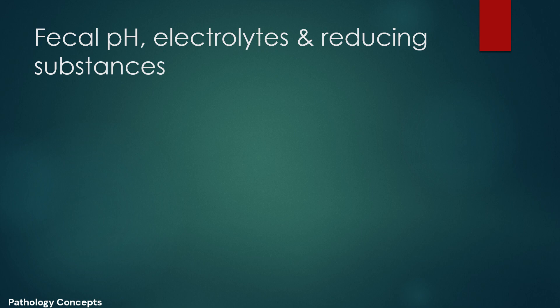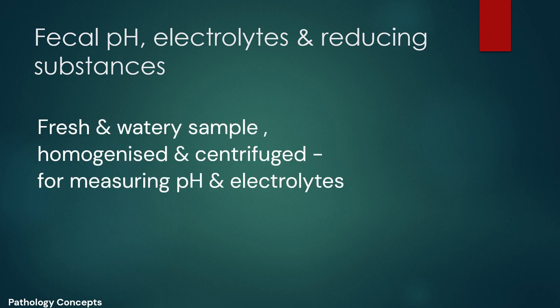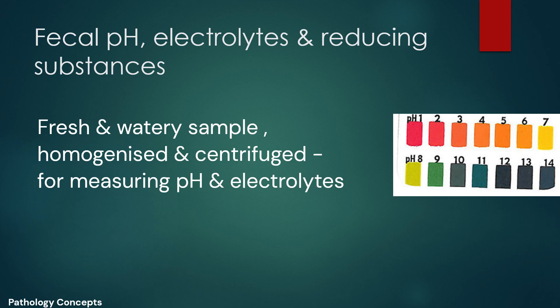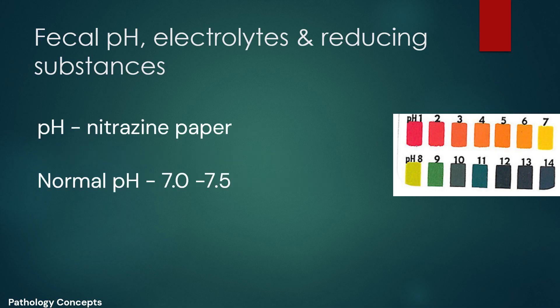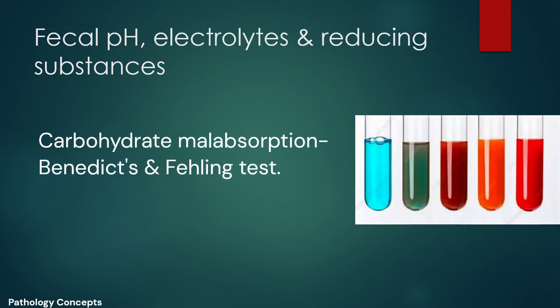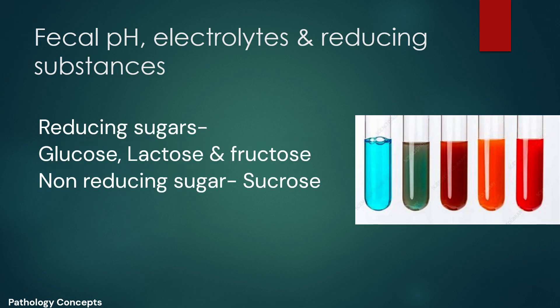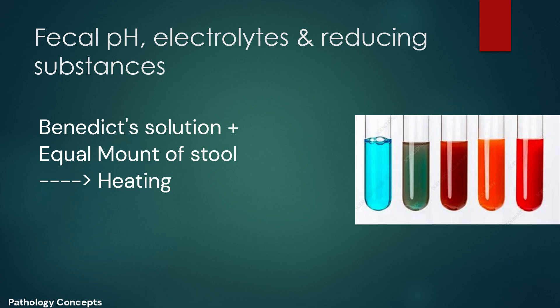Other tests include fecal pH, electrolyte, and reducing substance testing. After a fresh and watery fecal sample is homogenized and centrifuged, pH and electrolyte intensities are measured in the watery part of feces. The fecal pH is measured using litmus paper; normally it ranges between 7 to 7.5. If carbohydrate malabsorption is suspected, a reducing substance should be investigated using Benedict's or Fehling's test. Glucose, lactose, and fructose are reducing sugars; sucrose is not a reducing sugar.